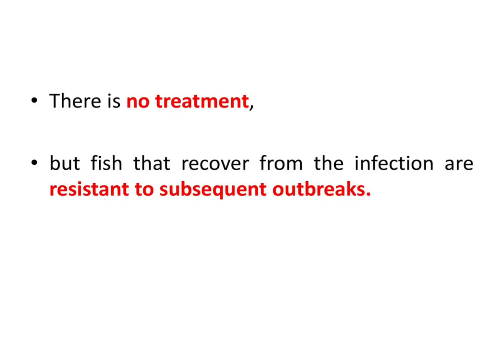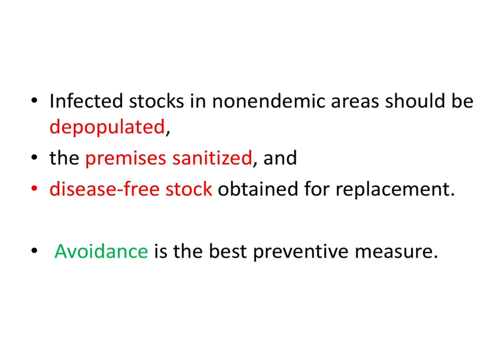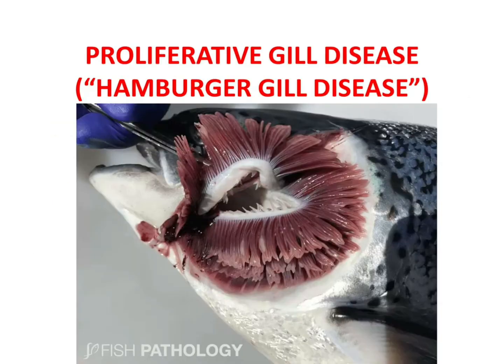There is no treatment for proliferative kidney disease, but fish can recover from the infection. Fish that recover are resistant to subsequent outbreaks. Infected stocks in non-endemic areas should be depopulated, the premises sanitized, and disease-free stock obtained for replacement. Avoidance is the best preventive measure. That's all about proliferative kidney disease.